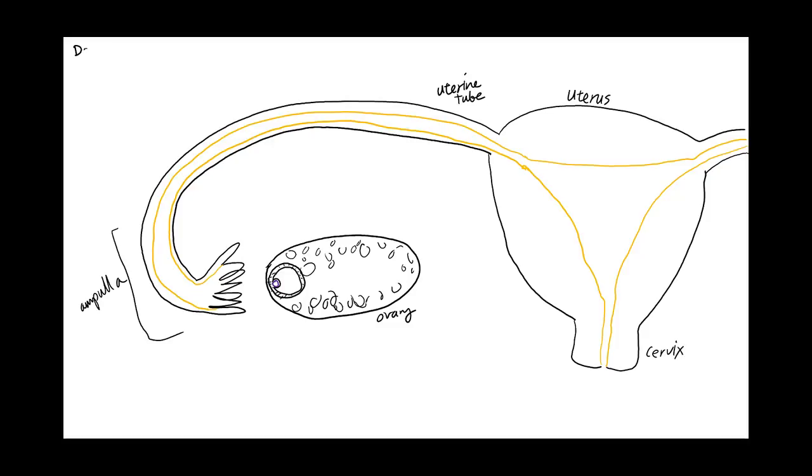We begin the story of embryonic development at day 14 in a woman's menstrual cycle, when the oocyte is ovulated out into the peritoneum. That's the oocyte being projected out into the abdominal pelvic cavity because the uterine tube and the ovary are not physically connected to each other.